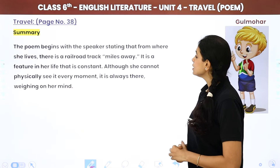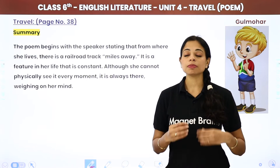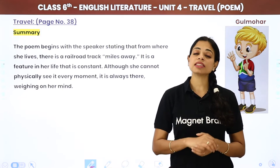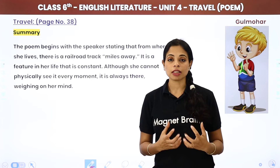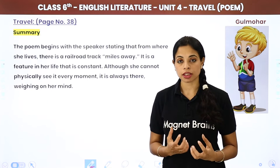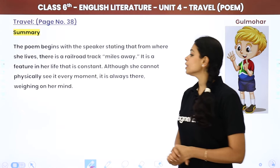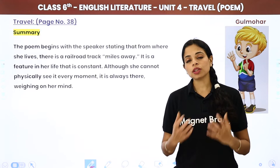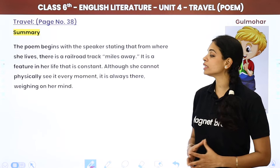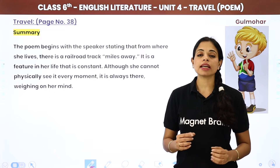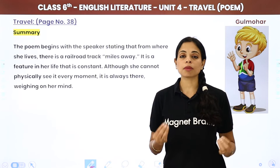The poem begins with the speaker stating that from where she lives, there is a railroad track miles away. This railway track is a constant feature in her life — always there, weighing on her mind even though she cannot physically see it every moment. It represents something that is always present in her thoughts.